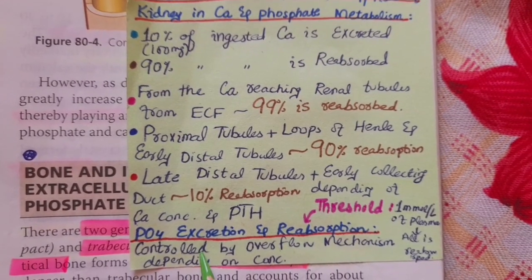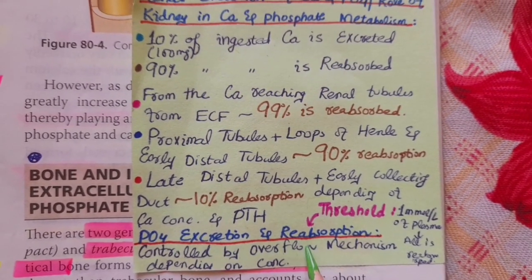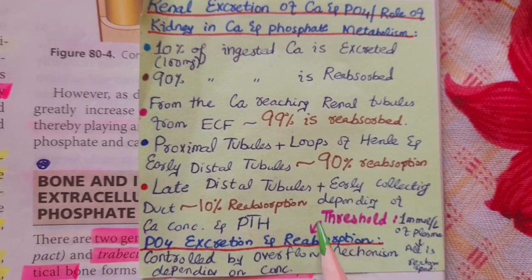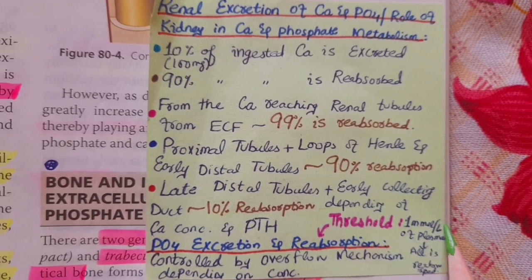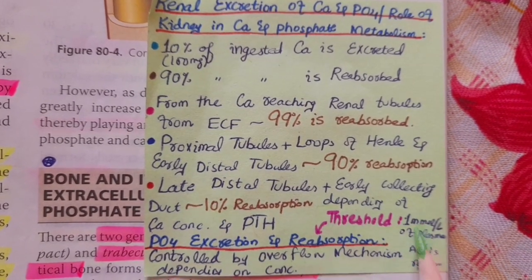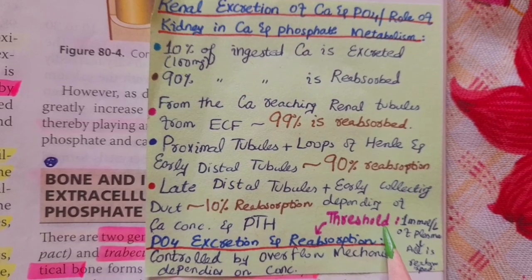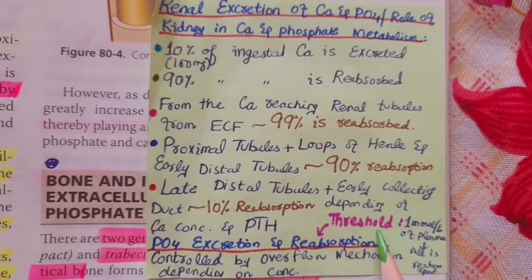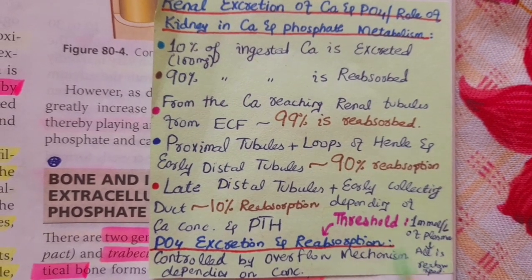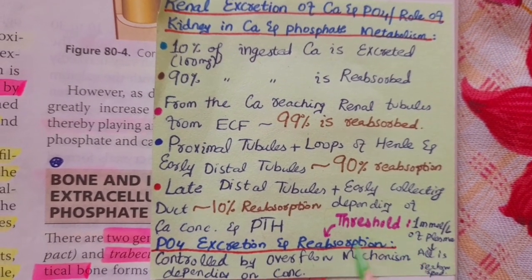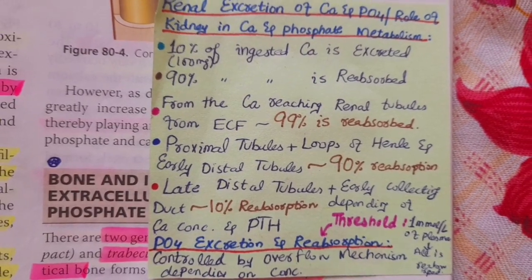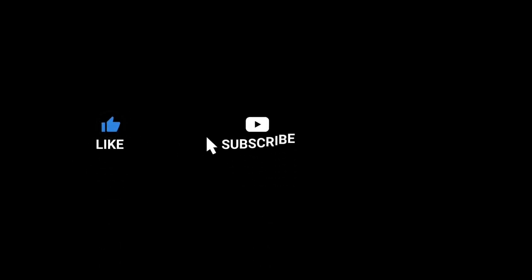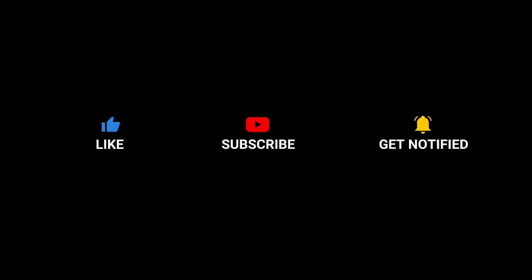Phosphate excretion and reabsorption is controlled by an overflow mechanism in the kidneys that depends on phosphate ion concentration in plasma. It has a critical threshold value of 1 millimole per liter. If plasma phosphate concentration is below this threshold, all phosphate is reabsorbed. If concentration is greater than this threshold, reabsorption depends on the level of phosphate ions in the plasma.